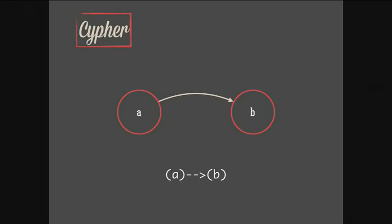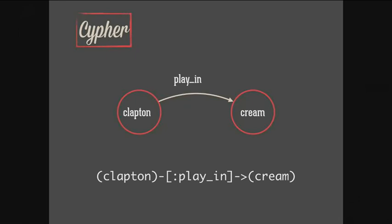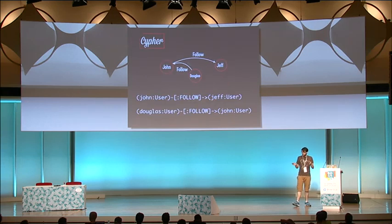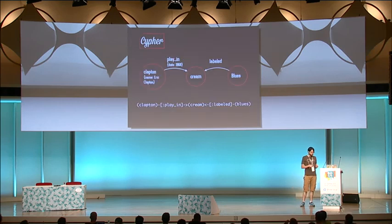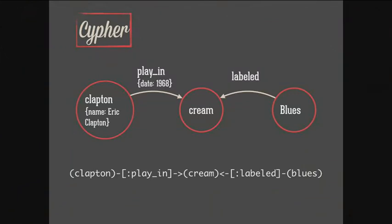We can represent other things. For example, Eric Clapton playing in Cream — we have one node for Eric Clapton, one for Cream as a band, and a relationship with semantics. In Neo4j we can label our nodes to categorize them. Here we have users related to each other — they follow each other. We can also add properties to nodes and relationships, such as a name property on a node or a date when a musician started playing in a band.